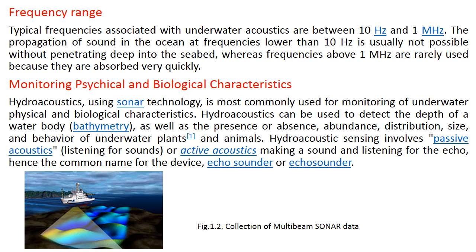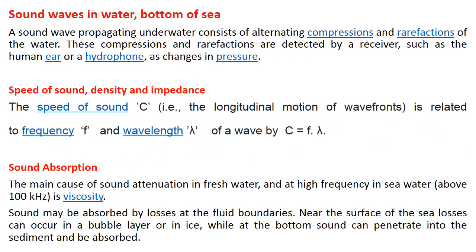Figure 1.2 shows a sample animated picture of collection of multi-beam sonar data showing sound waves in water and at the bottom of the sea. A sound wave propagating underwater has characteristics of alternating compression and rarefactions of the water. These compressions and rarefactions are detected by a receiver such as the human ear or a hydrophone, through changes in pressure.